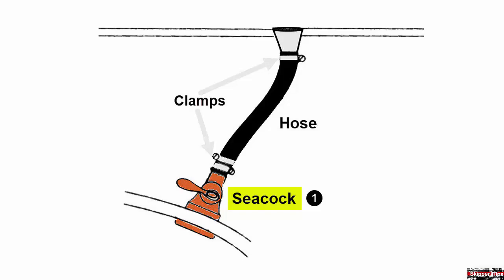The most common seacock material used today listed with Underwriters Laboratory is marine bronze or Marlon. Marlon is a carbon fiber and glass composite. To find out more about Marlon seacocks, see the link below this video.